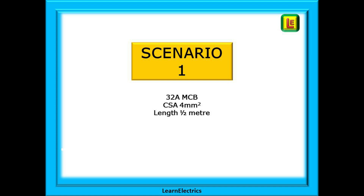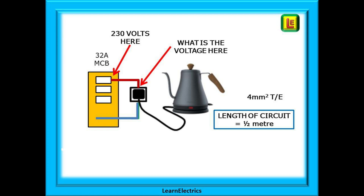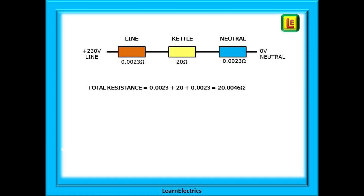Scenario one: a circuit protected by a 32-amp MCB with four-millimeter twin-and-earth cable. A socket is installed next to the consumer unit, just half a meter from it. The voltage at the consumer unit is fixed at 230 volts. We can simplify this circuit including the kettle and visualize it as three resistances in series: the line conductor at 0.0023 ohms (half a meter of four-millimeter copper cable), the kettle as a 20-ohm resistance, and the neutral conductor at the same value as the line.